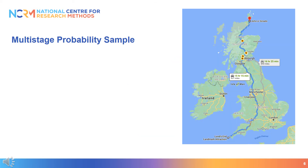The use of a multi-stage probability sample can be practical when survey interviews are being carried out face to face. The interviewer therefore needs to travel to the homes of participants. Without a multi-stage probability sample, the fieldwork costs involved in travelling large distances between survey respondents may be prohibitive.